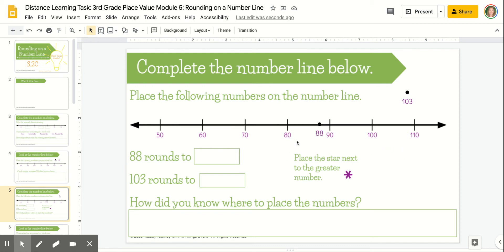Now, when I look at this number line, since I know 88 is closer to 90 than to 80, then I know 88 rounds to 90. Does that make sense?